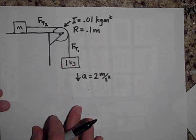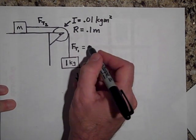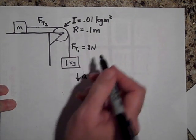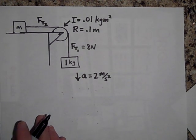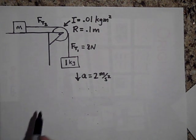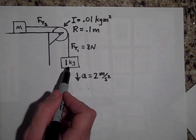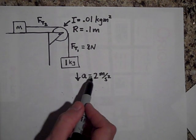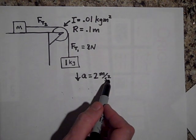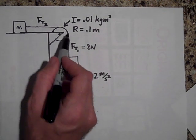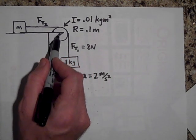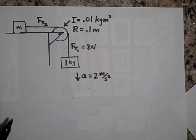So now we know FT1 is eight newtons. If the system is accelerating at two meters per second squared and there is no slipping of the string on the pulley, what will be the angular acceleration of the pulley? Go ahead and pause.